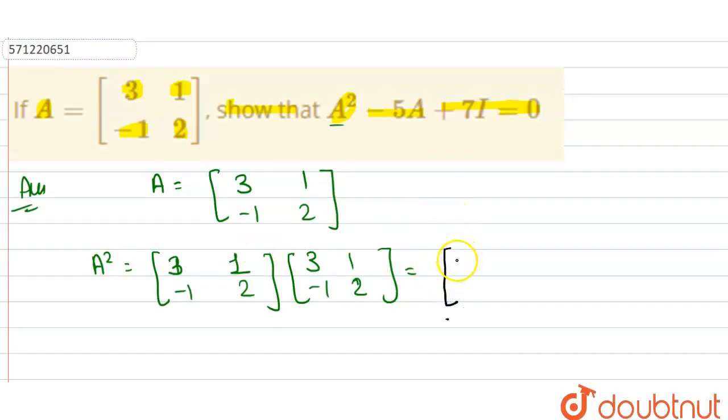The first element of matrix A squared: multiply first row with first column, that is 3 into 3 and 1 into minus 1. Then first row is multiplied with second column, so 3 into 1 and 1 into 2.